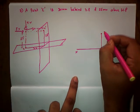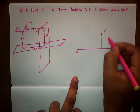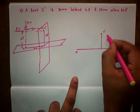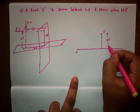This is going to be C dash. The distance is 25 mm.